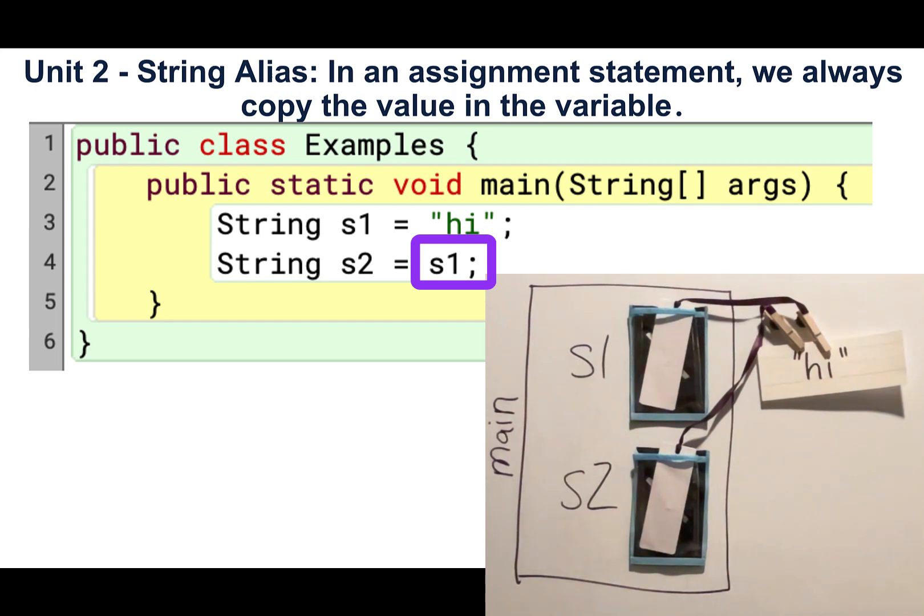The big idea here is that in an assignment statement, we always copy the value of the variable. That's how ints work too. And when it's a variable that stores a reference, copying the value of the variable means that we're copying the reference and then have two references that keep track of the same object.